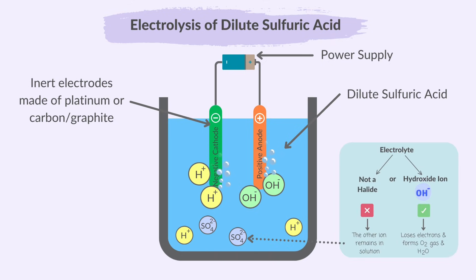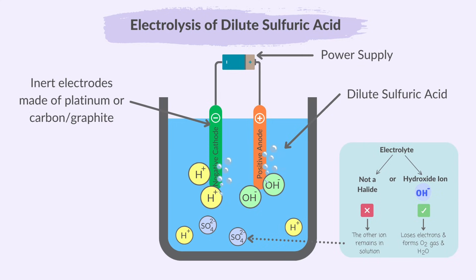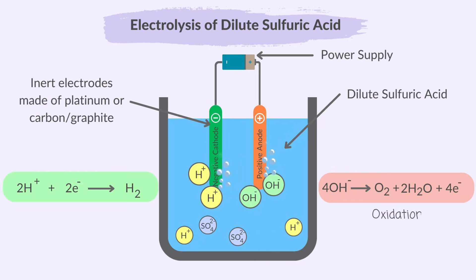At the anode, oxygen gas is released. Hydroxide ions are attracted to the anode. Since sulfate ions are not halide ions, it's the hydroxide ion that gets discharged. Remember, if a halide is not present, it's always the hydroxide that gets discharged. They lose electrons and form oxygen gas and water. So OH- ions are oxidized.